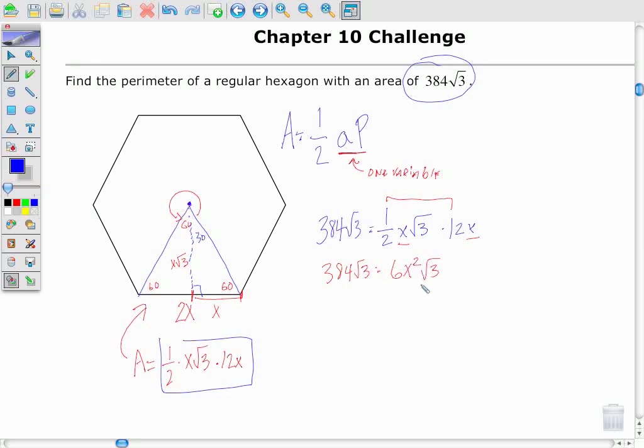Now I have an equation that I can solve, an equation with only one variable. It's a quadratic equation, but it only has an x squared, so maybe if I can get this x squared by itself, I could solve by using square roots. So I could divide both sides of my problem by the square root of 3, and the square root of 3 divided by the square root of 3 is 1, giving myself 384 equals 6x squared.